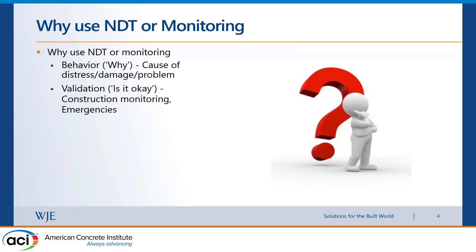The third bucket is emergencies, which is more of an instrumentation application. There are many examples in recent years of bridges being hit — either by trucks, or in Louisiana there was a bridge hit by a barge in the river. We did monitoring in that emergency situation where you need to go out right away and monitor the portion of the structure closest to where the damage occurred, to make sure no further damage will happen and the structure is safe for workers to fix it.